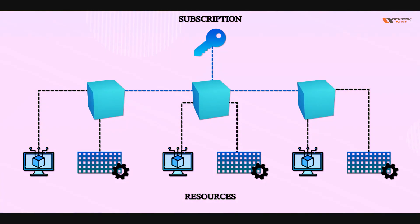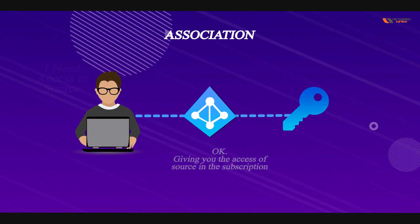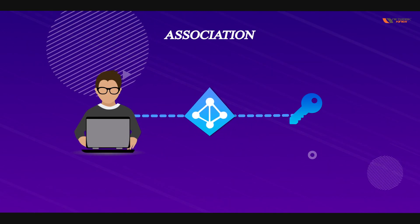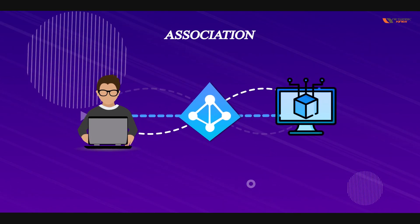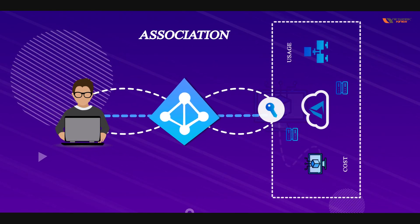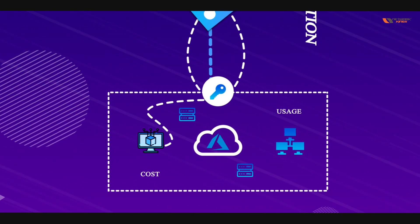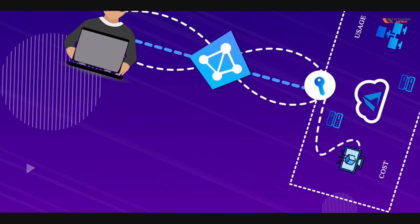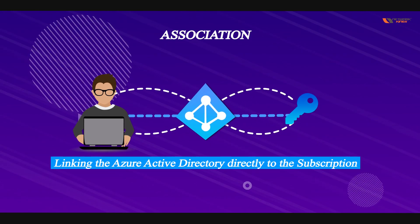There is a concept called association. We need to provide a user access to a resource, but Azure Active Directory and the subscription are two different services. To allow Azure Active Directory to authenticate and authorize users to resources in a subscription, we do something called association — which is linking an Azure Active Directory tenant to a subscription.